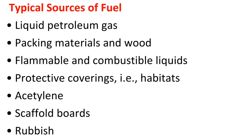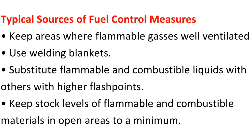Typical sources of fuel include: liquid petroleum gas; packing materials and wood; flammable and combustible liquids; protective coverings, that is, habitats; acetylene; scaffold boards; and rubbish. Typical fuel control measures include: keep areas where flammable gas is well ventilated; use welding blankets; substitute flammable and combustible liquids with others with higher flash points; and keep stock levels of flammable and combustible materials in open areas to a minimum.